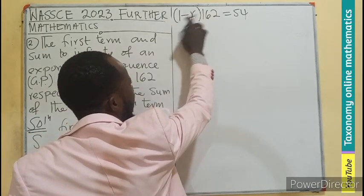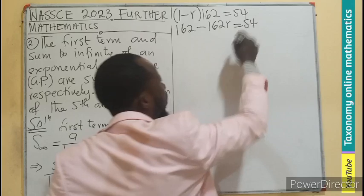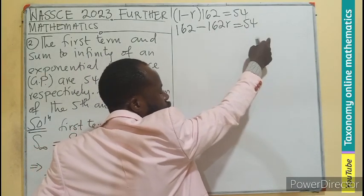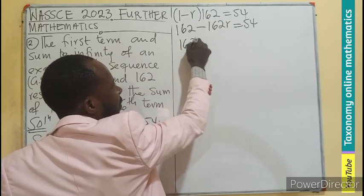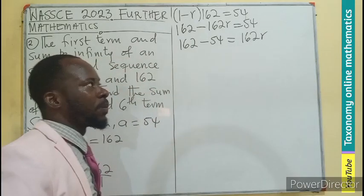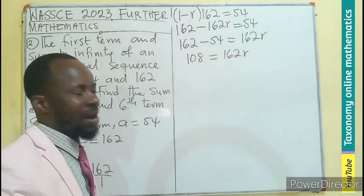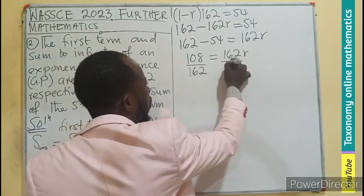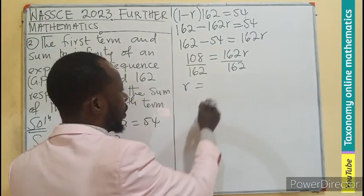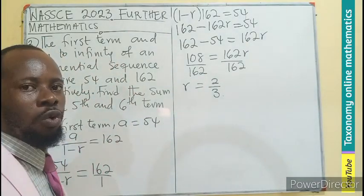Let's expand this bracket. 1 times 162 is 162 minus R times 162 equals 54. I believe we are having a constant and a constant. So let's bring the R to the right and 54 to the left. So 162, since it's positive, becomes negative 54, negative becomes positive 162R. And that here rises to 108 equals 162R. Let's divide both sides by 162. Do we have a common factor? That will be 54. So 54 goes here 2 times and here 3 times. So our common ratio is 2 on 3.